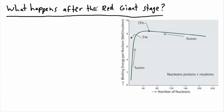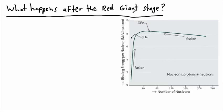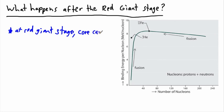Now what happens after the red giant stage? In the last videos, we looked at stars leaving the main sequence — they run out of hydrogen in the core, the core collapses, they end up eventually fusing helium and then higher elements, and they end up in the red giant phase. The important thing is that at the red giant stage, the core cannot fuse iron. It can't fuse iron, so it runs out of things to do — it's out of options.